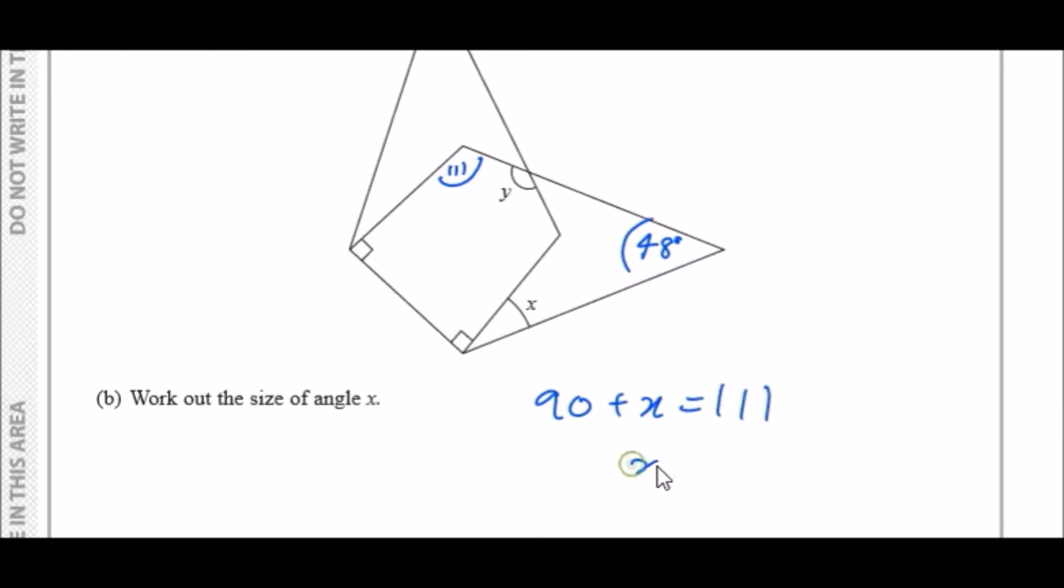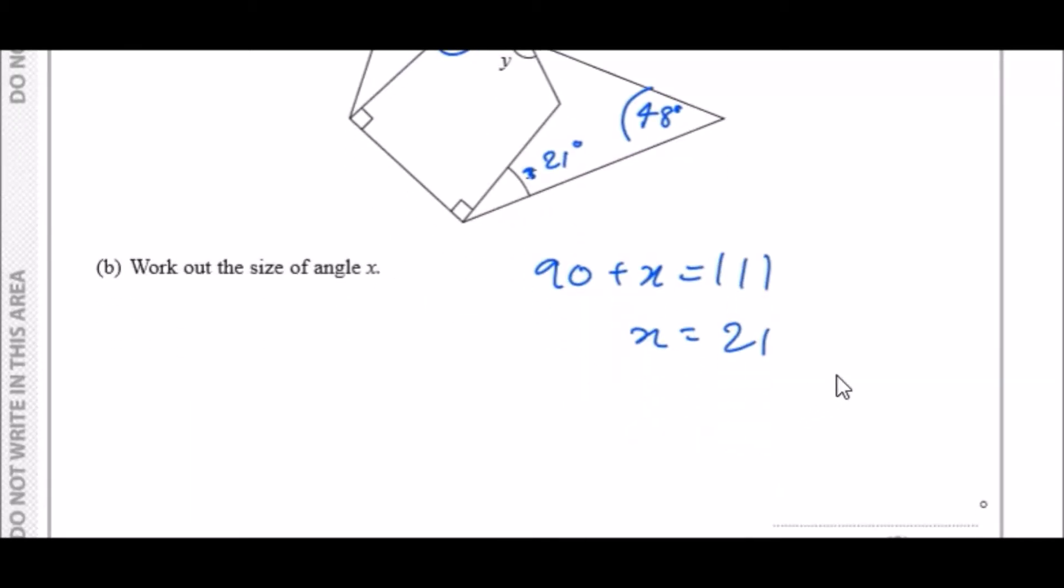Therefore if you subtract 90 you should just get 21, so this is 21 degrees. Work out the size of angle x. We did that, it's 21 degrees.